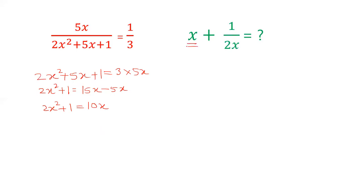We have to find out x plus 1 by 2x. We can convert 2x square to x by dividing by 2x, and 1 becomes 1 by 2x. We can simply divide the whole equation by 2x.